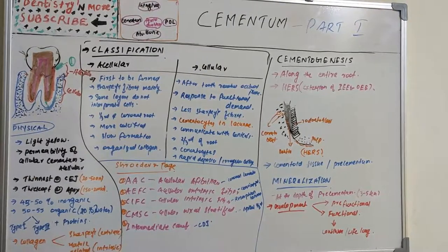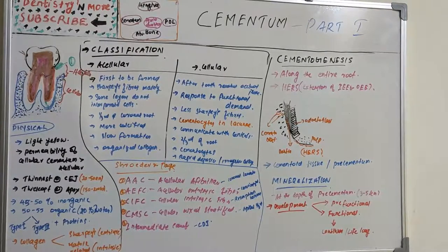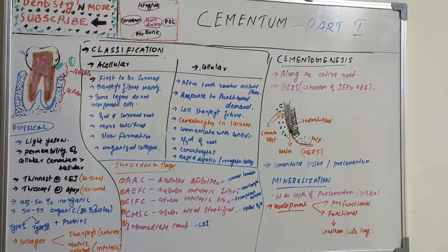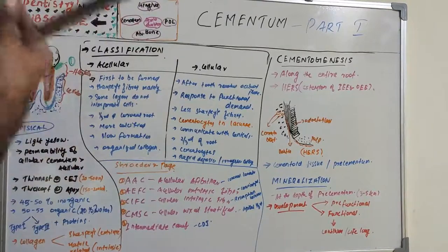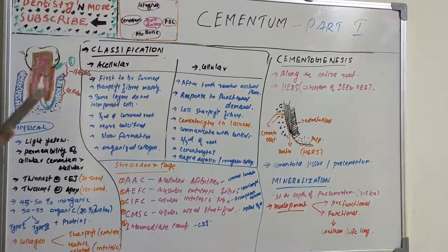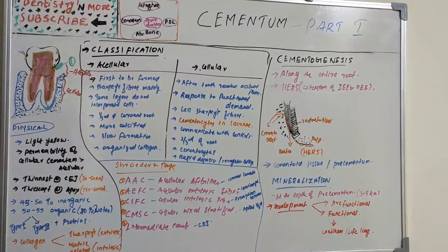Acellular afibrillar cementum (AAC) is formed at the most cervical enamel border following completion of pre-eruptive enamel maturation, and sometimes also during tooth eruption. It is probably secreted by cementoblasts. Pre-eruptive maturation occurs before eruption, whereas post-eruptive maturation takes a longer period after eruption as enamel takes up minerals from saliva and gingival crevicular fluid. AAC contains no cells and no fibers.